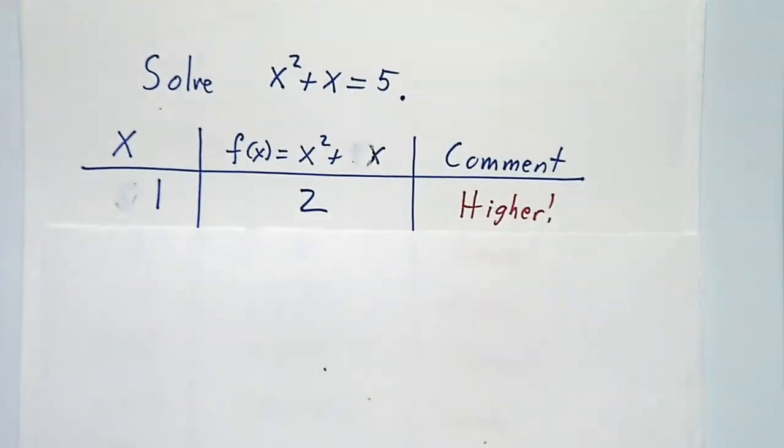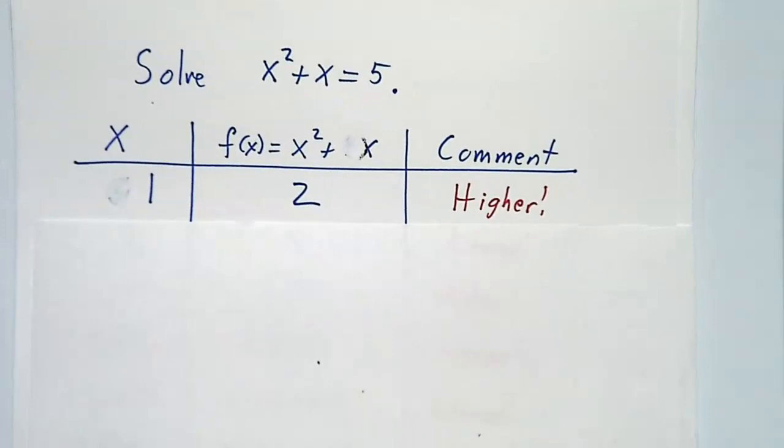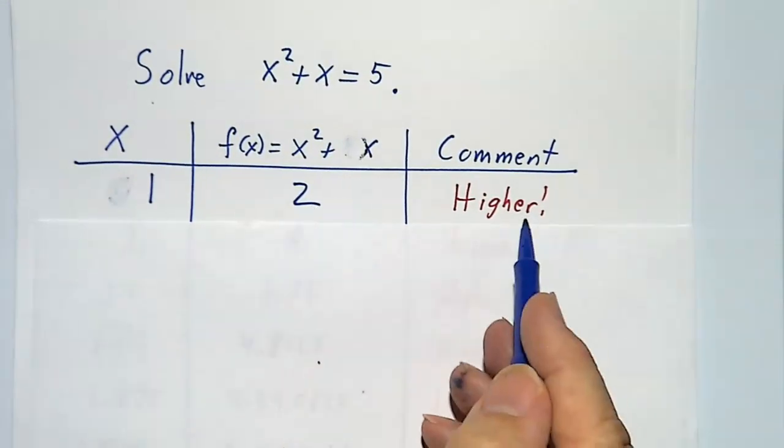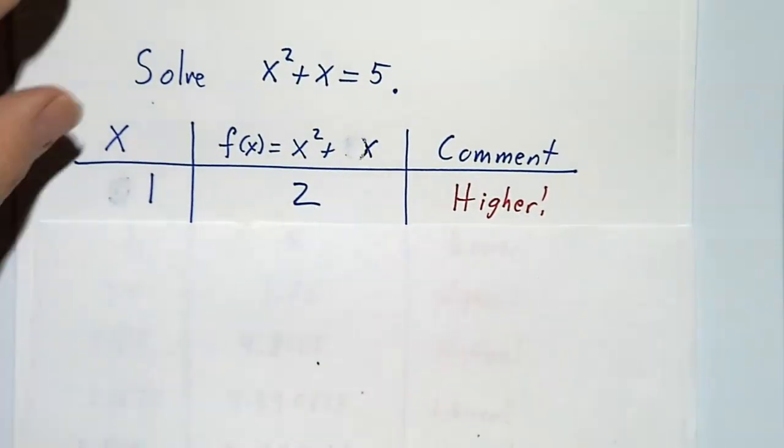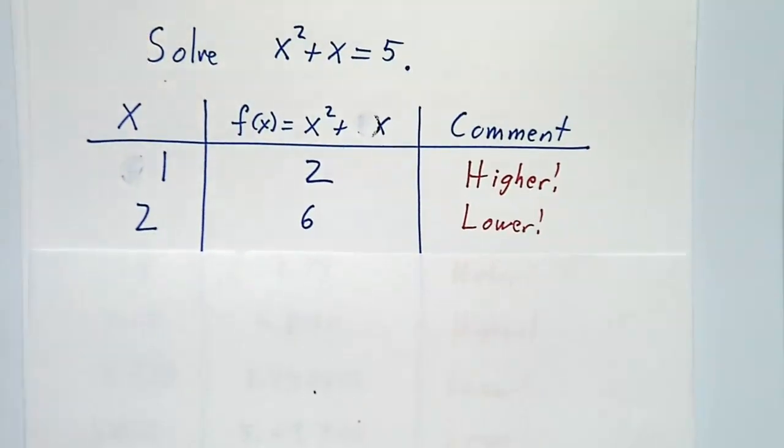Well, you know that 1 is too low, because 1 squared plus 1 is 2. You need to go higher. And you also know that 2 is too high, because 2 squared plus 2 is 6. You need to go lower. So you just guess 1 and a half.